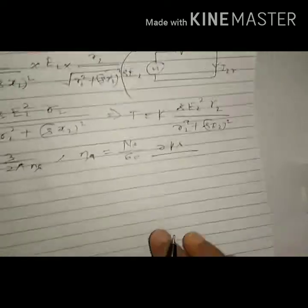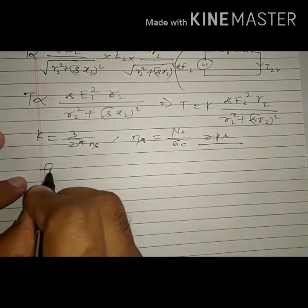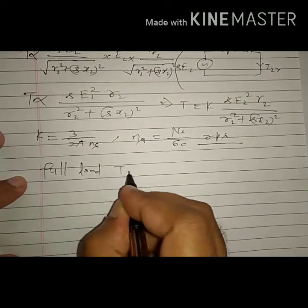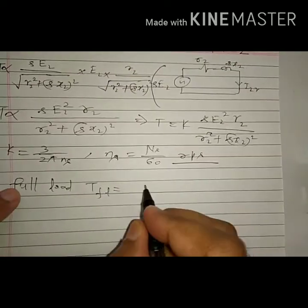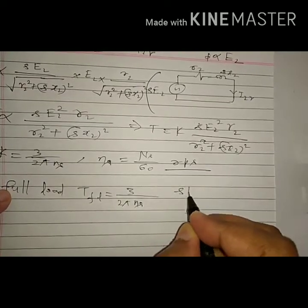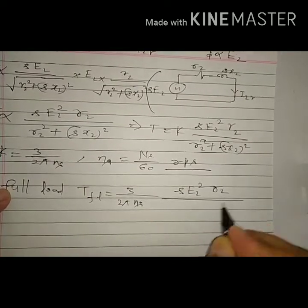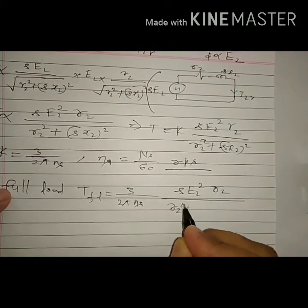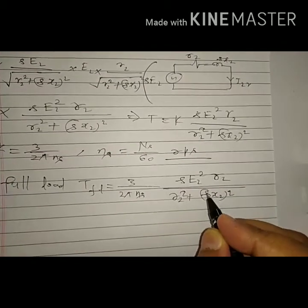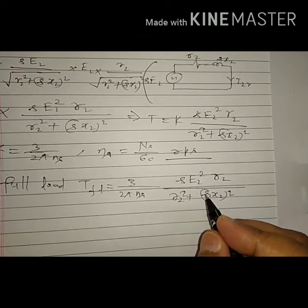Therefore, the full load torque TFL can be written as: TFL = (3 / (2*pi*ns)) * s * e2² * r2 / (r2² + (s*x2)²). This is the complete expression for full load torque.